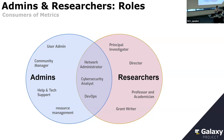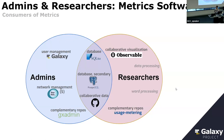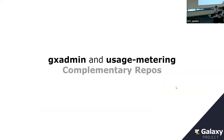On the exclusive admin side, we have everything from community management to resource management. On the researcher side, we have everything from a PI that might need this information to professors and academics. There's a lot of overlap for everyone in the room — anything from IT support, resource management, resource acquisition, stakeholder support, proving that different tools are working, and even strategic tool makers who want to make something that hasn't been developed yet or make something popular better.